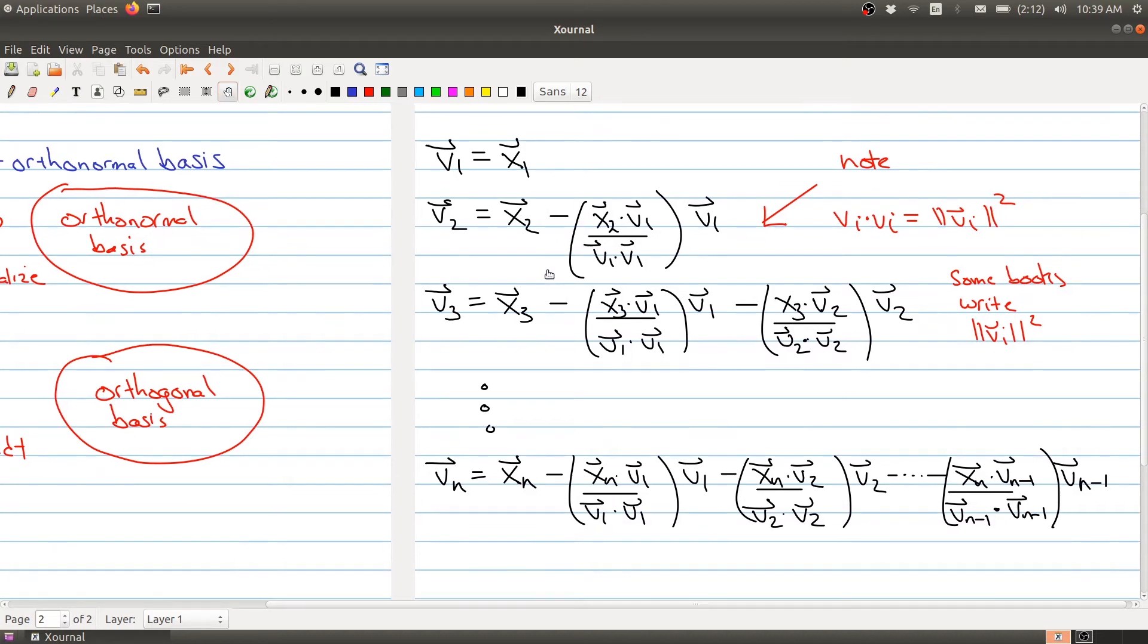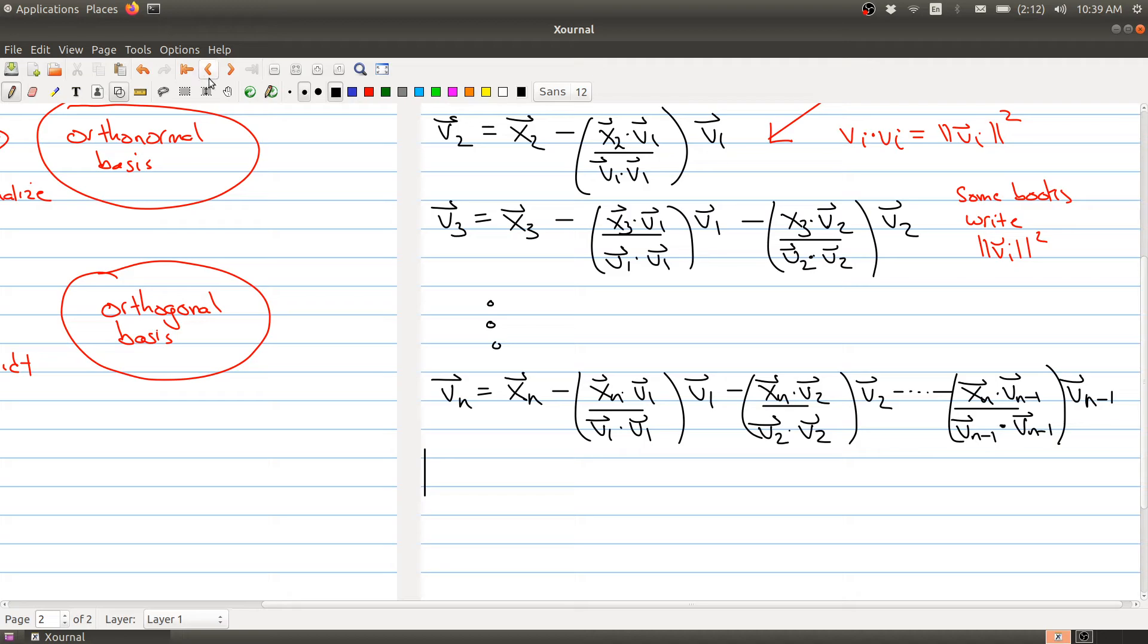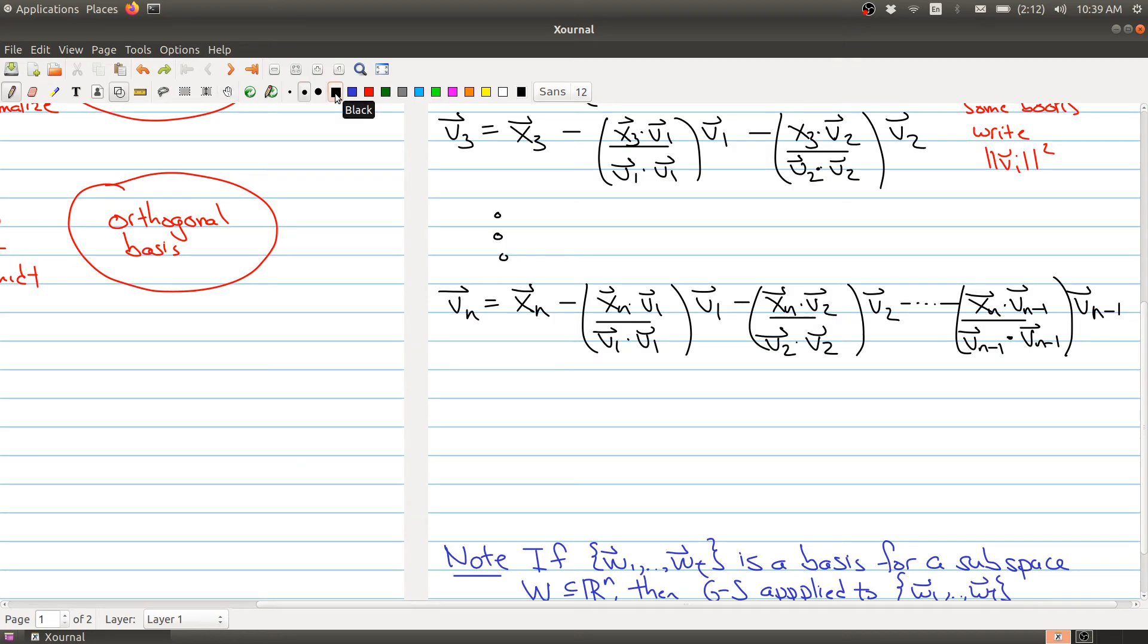So this is the Gram-Schmidt process. And let me write the most important part about this process is when you're done, you get a collection of vectors, you get n vectors. And the property is that this is an orthogonal basis for R^n. So you've used your vectors x to make a new set of vectors v1 through vn that happens to be not only a basis for R^n, but it's also going to be an orthogonal basis.